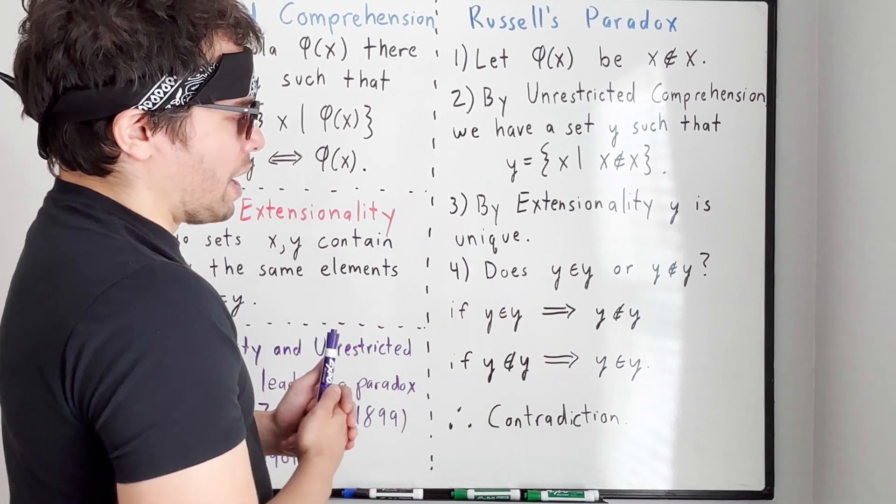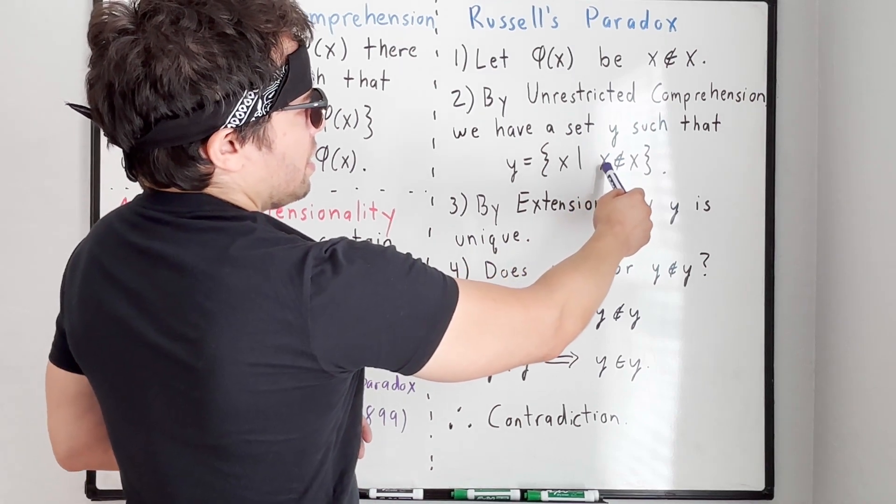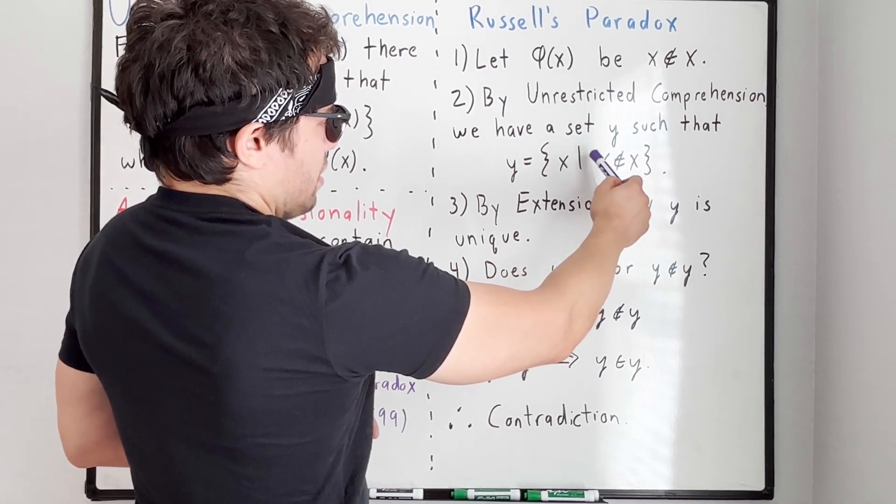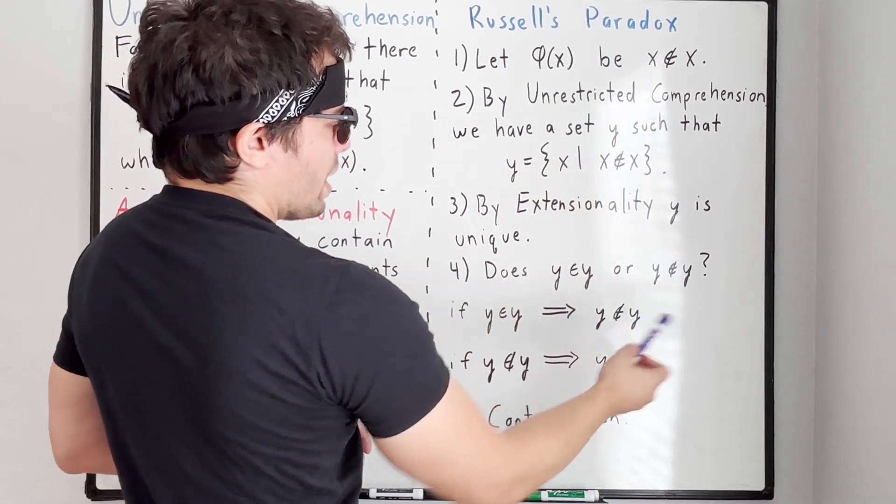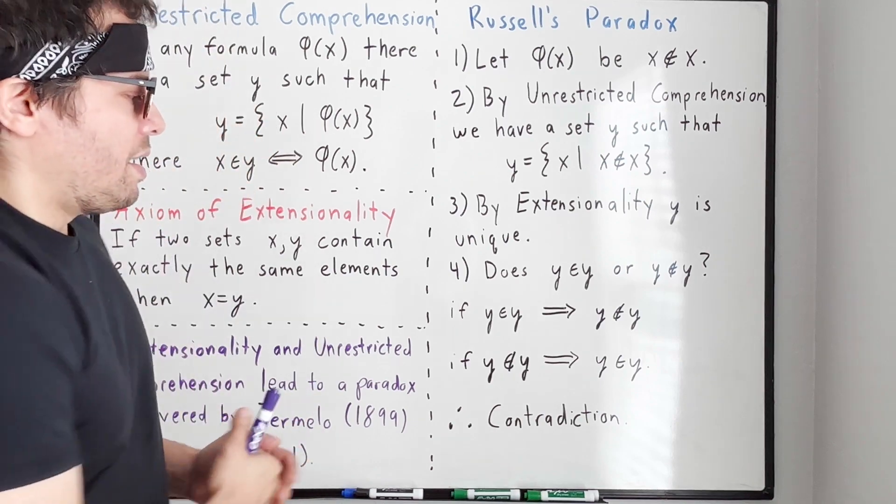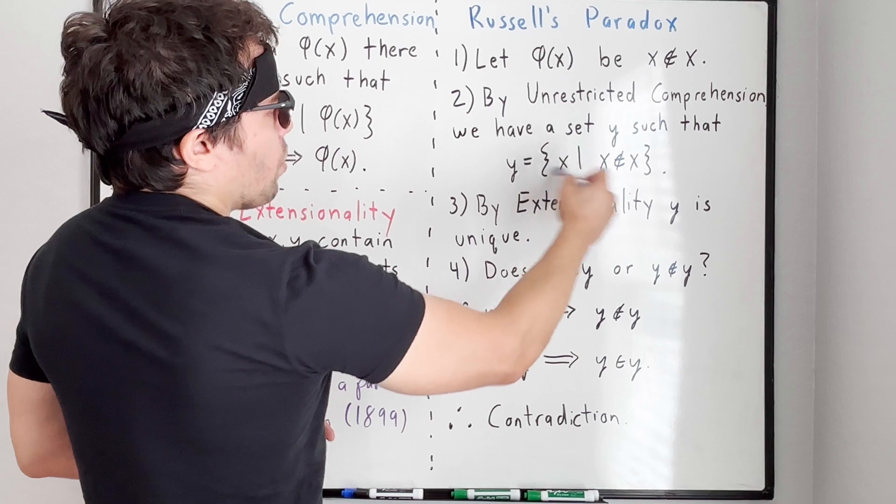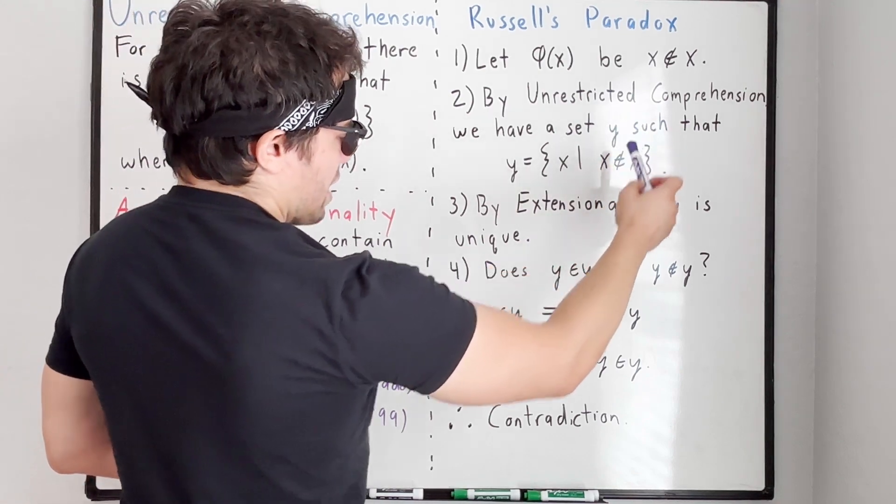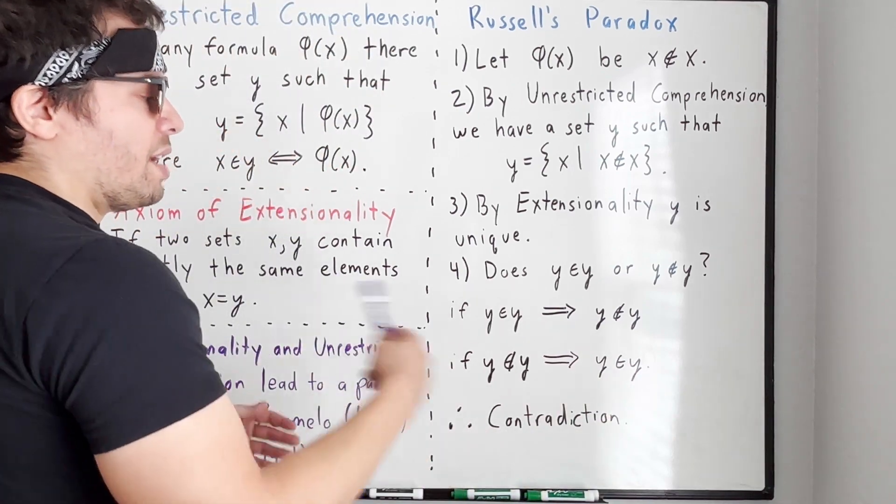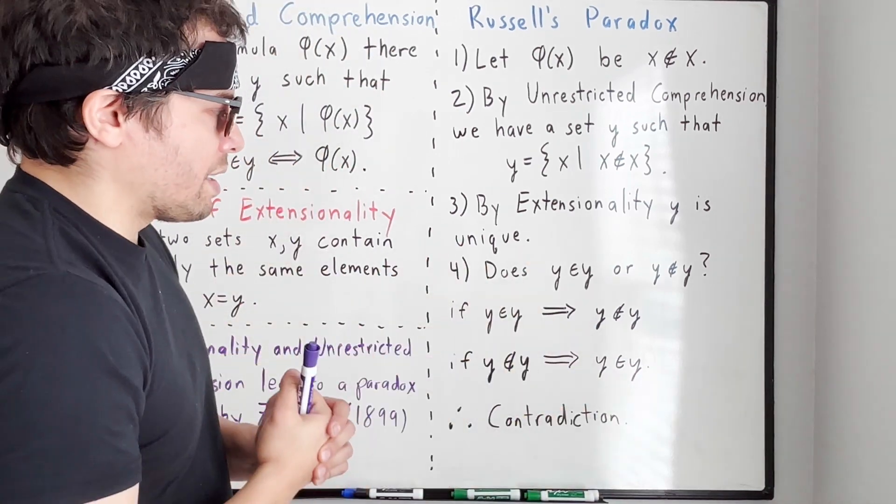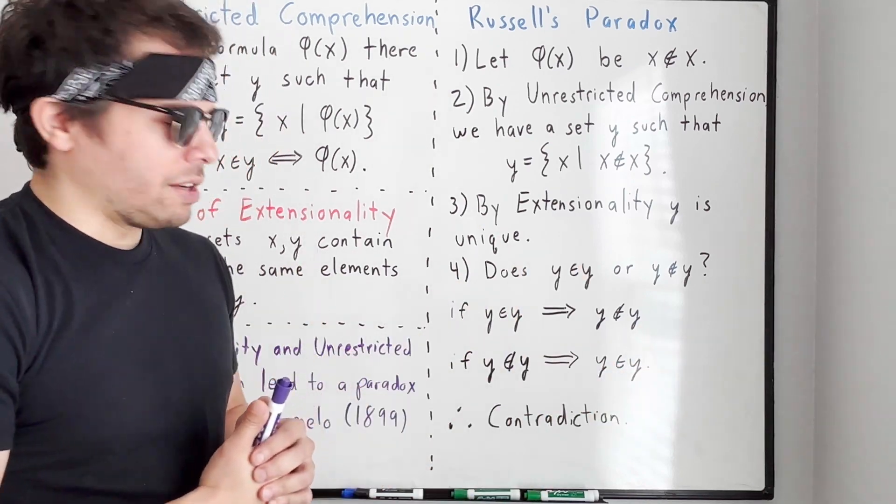If y is an element of y, then by definition, if y is in y, then it must satisfy this formula. That means y is not in y. If y is not in y, then by definition of y, y contains those x such that x is not contained in x. That means y should be in y. So if y is in y, then y is not contained in y. And if y is not contained in y, then y is in y. This is a contradiction.